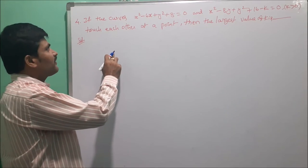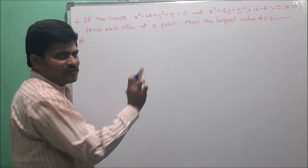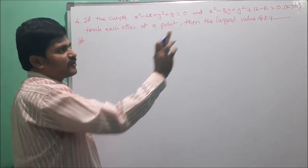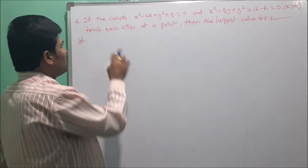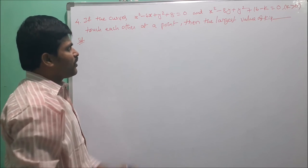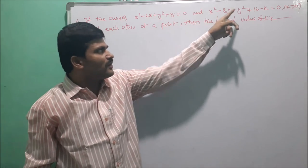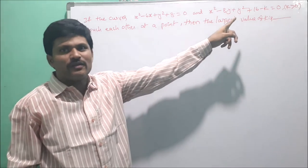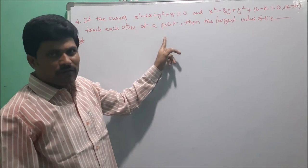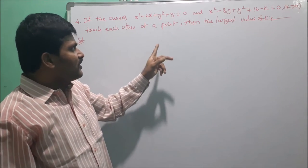The fourth problem: if the curves x² - 6x + y² + 8 = 0 and x² - 8y + y² + 16 - K = 0 (where K > 0) touch each other, these are two circles: x² + y² - 6x + 8 = 0 and x² + y² - 8y + 16 - K = 0. These circles touch each other, either internally or externally.